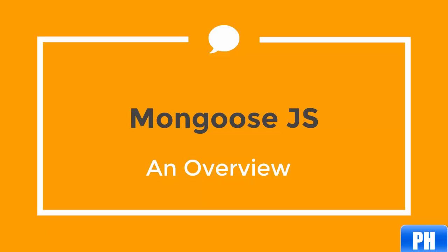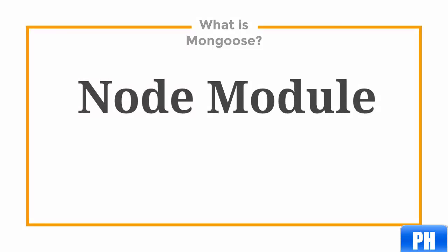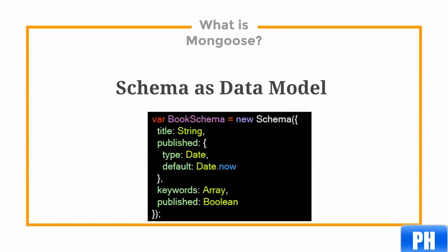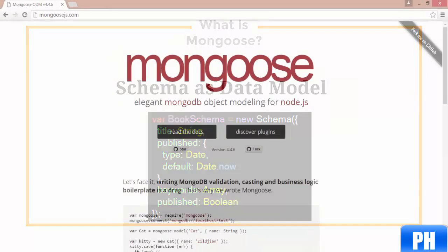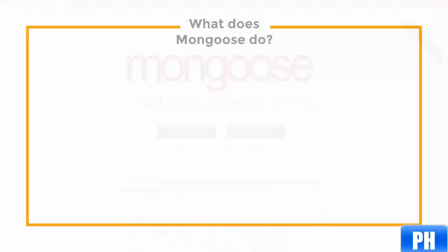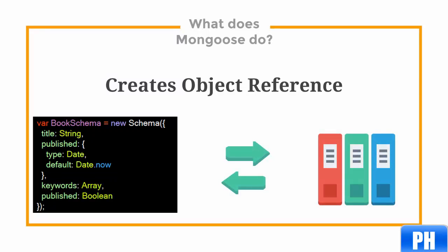This video will cover the basics of what Mongoose is and how we use it. Mongoose.js is a Node module that makes it easy for us to interact with MongoDB. It provides us an abstraction in the form of an API for creating schemas and manipulating data. The schema creates key and value pairs for the different data types available to us within MongoDB. Mongoose creates an easy-to-use object reference when interacting with MongoDB, and what makes Mongoose great is that our database gets modeled within our code.